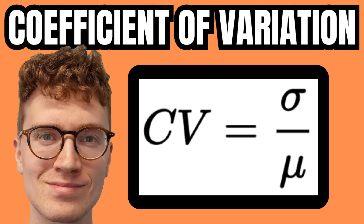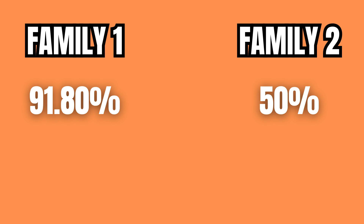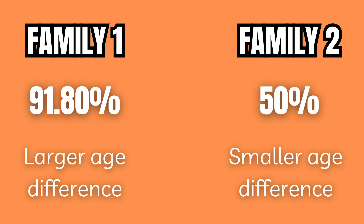But what does this 91.80 percent really mean? Well, if we were to compare these four siblings, which have a coefficient of variation of 91.80 percent, to another set of siblings that had, for example, a coefficient of variation of 50 percent, it would mean that the second set of siblings with the smaller coefficient of variation has a much smaller spread of variation in their ages. More simply put, it would mean that the second set of siblings are much closer in age to one another.